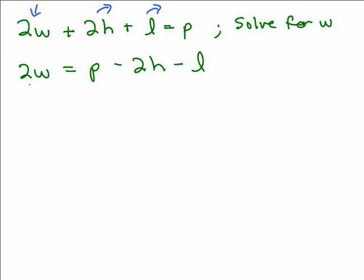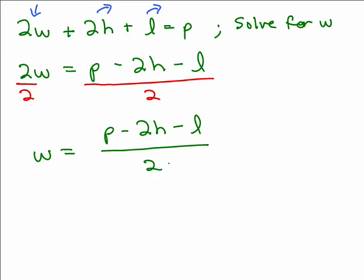Okay, we're close to being done. If this was 2W = 8, for instance, you would just divide both sides by 2. And you're going to do the same thing here. You're going to divide both sides by 2. But you've got this whole side to divide by 2. So you have to put the whole thing over 2. So we have W = (P - 2H - L) / 2.